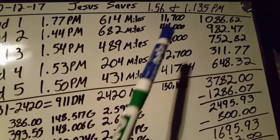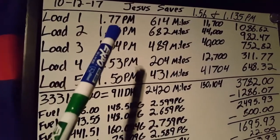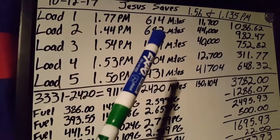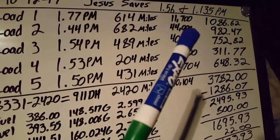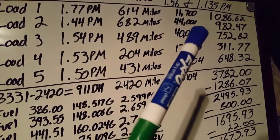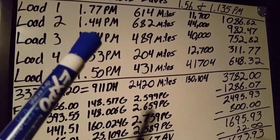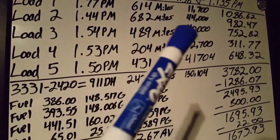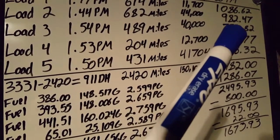Load number one: $1.77 per mile, 614 miles, 11,700 pounds, $1,086.62. Load number two: $1.44 per mile, 682 miles, 44,000 pounds, $982.47.